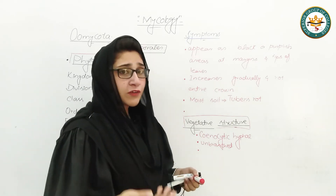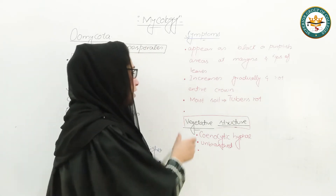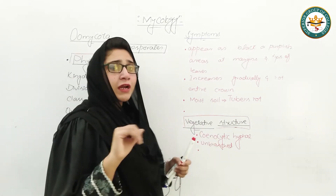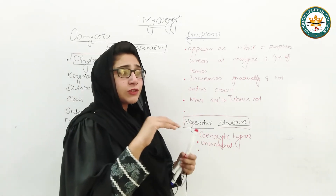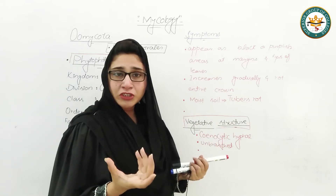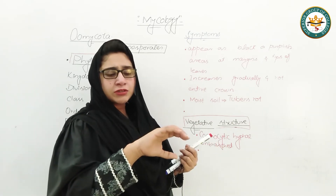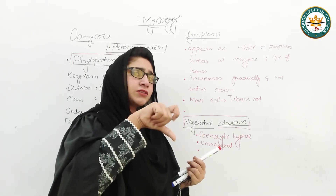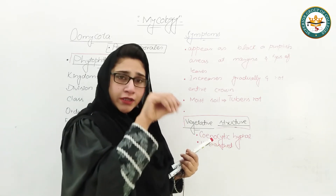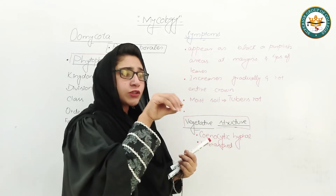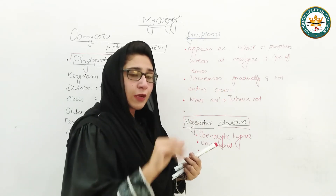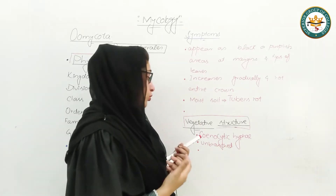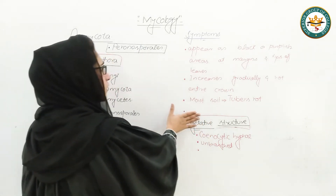The endoplasmic reticulum, mitochondria, and all organelles present in any eukaryotic cell are found here. As we all know, fungi is a eukaryotic organism. When it attacks its host, it attacks through germ tube formation. Germ tube formation produces a knob-like structure which can help penetrate the host so that it can absorb food and cause rot. This is the vegetative structure.